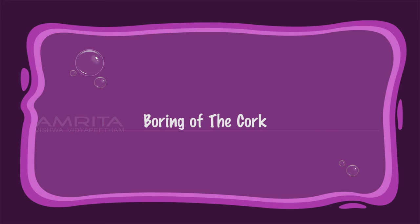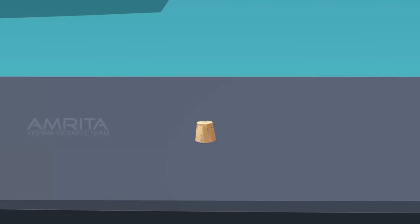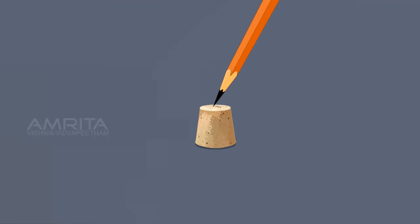Boring of the cork: Place the cork on the table with its narrow end upward. Mark the position of the hole on both sides of the cork with a pencil.